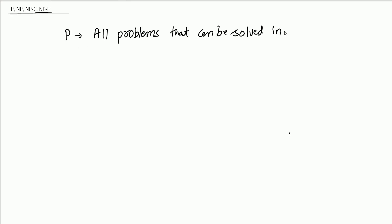Now we will see P, NP, NP-Complete and NP-Hard problems. First we will see P and NP. We will only talk about decision problems in which the answer is either yes or no, not optimization problems where the answer is maximum or minimum. P problems are those problems that can be solved and verified in polynomial time. All problems for which we have a polynomial time solution are P problems.